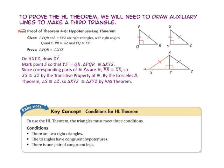To use the hypotenuse-leg theorem, the triangles must meet three conditions. First, there must be two right triangles. Second, the triangles have to have congruent hypotenuses. And third, there is one pair of congruent legs.